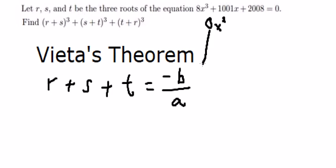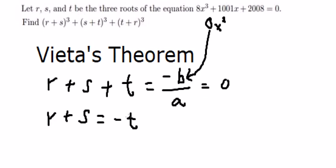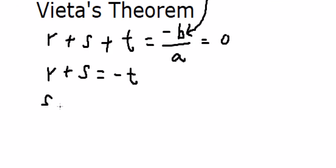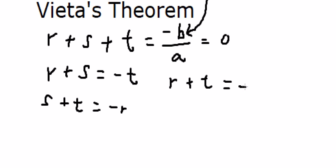Since B is 0, in this situation you get R plus S equal to negative T. Similarly, S plus T equals negative R, and R plus T equals negative S.